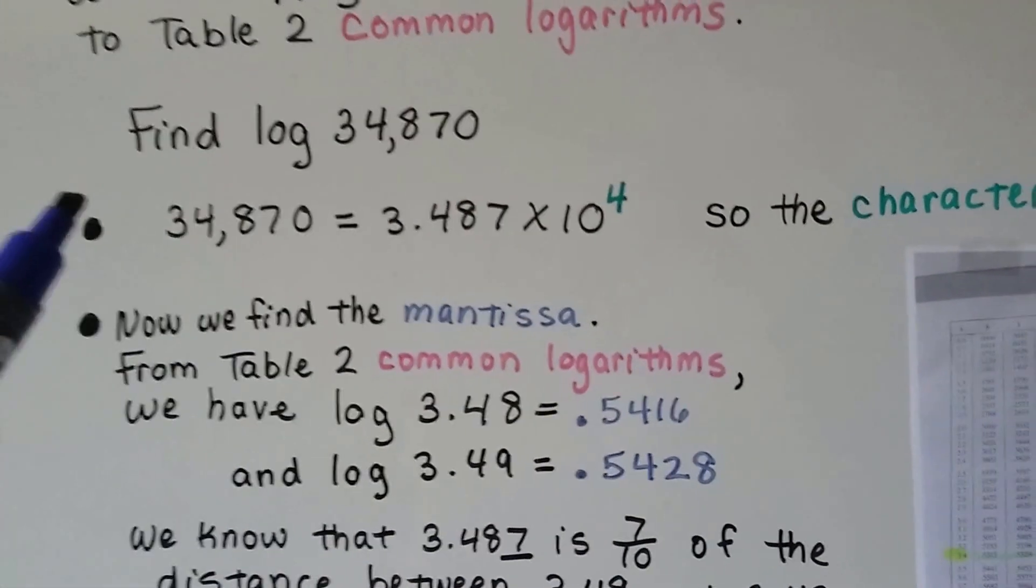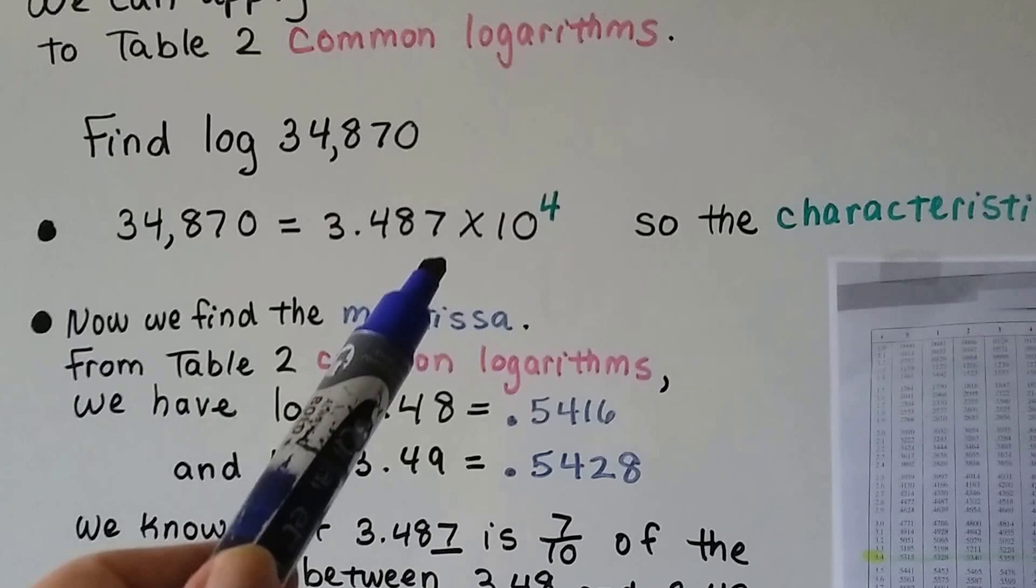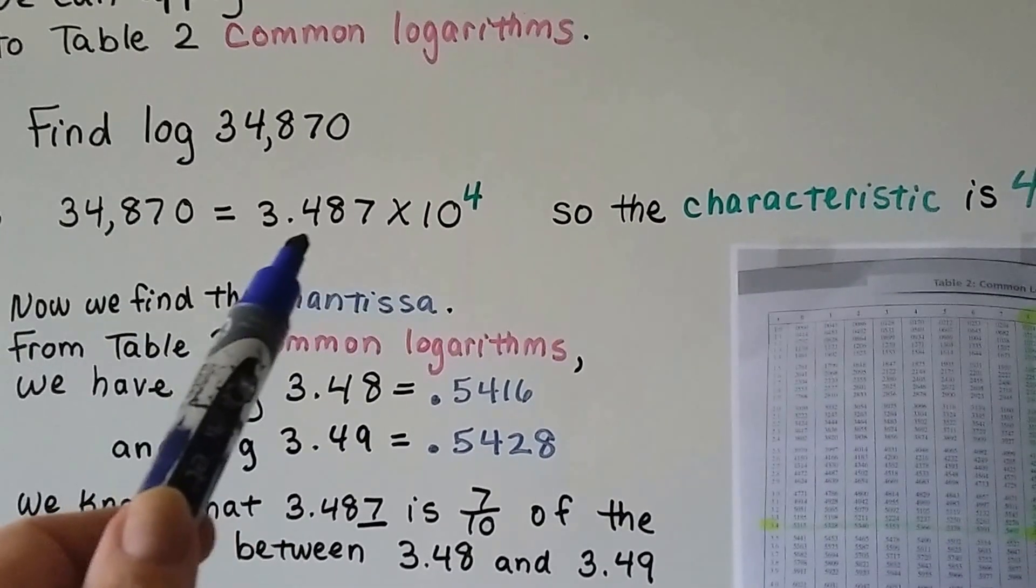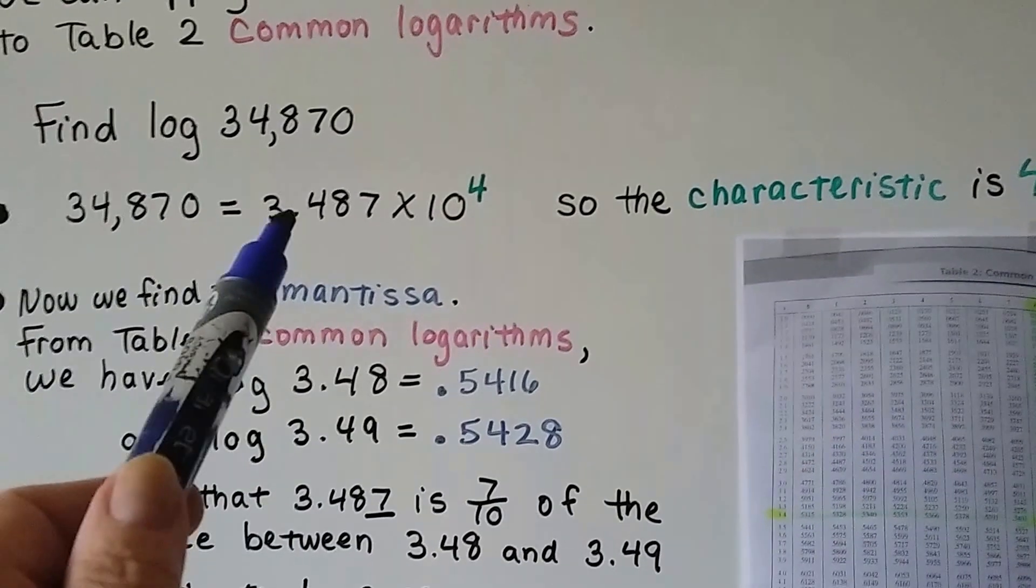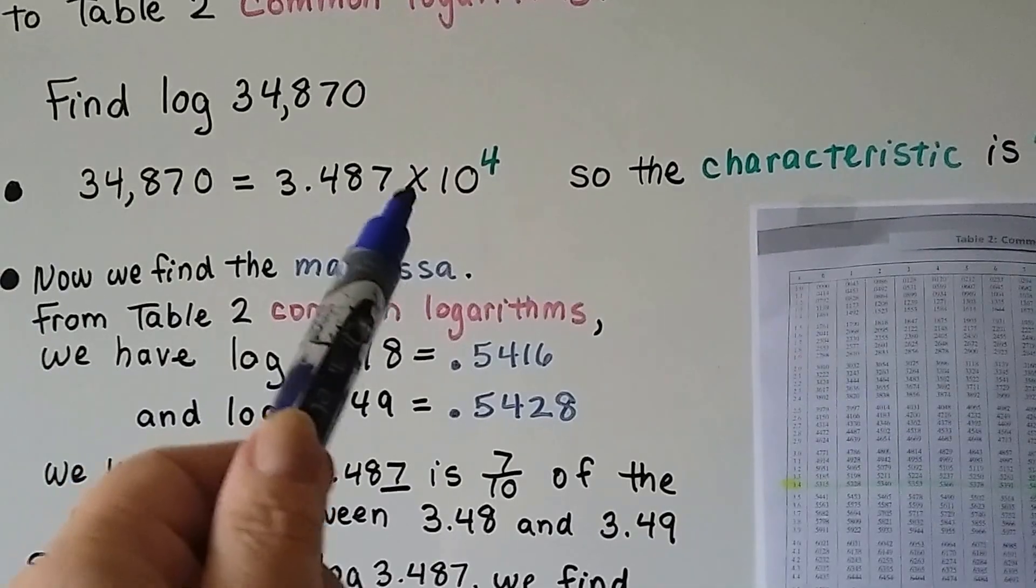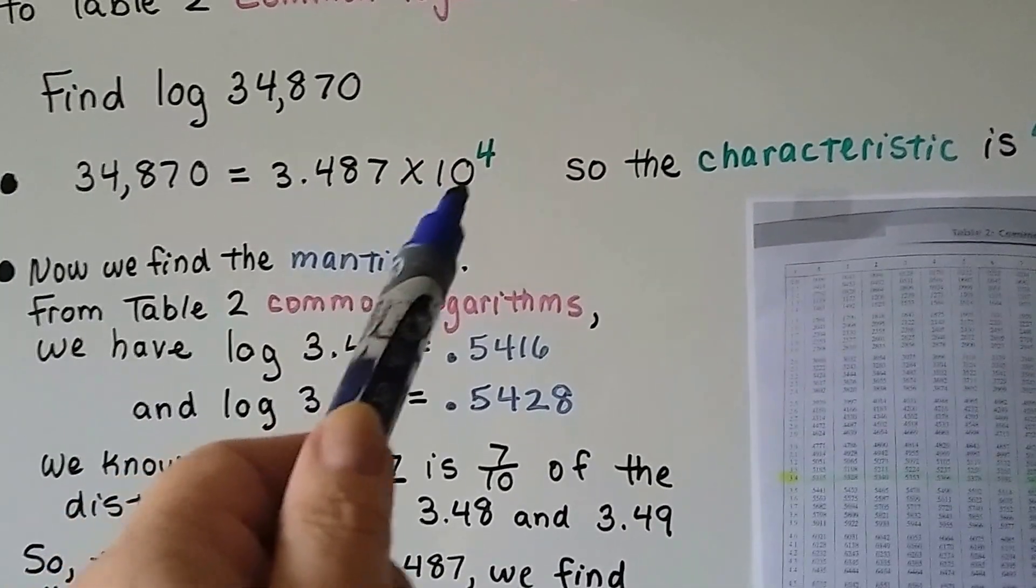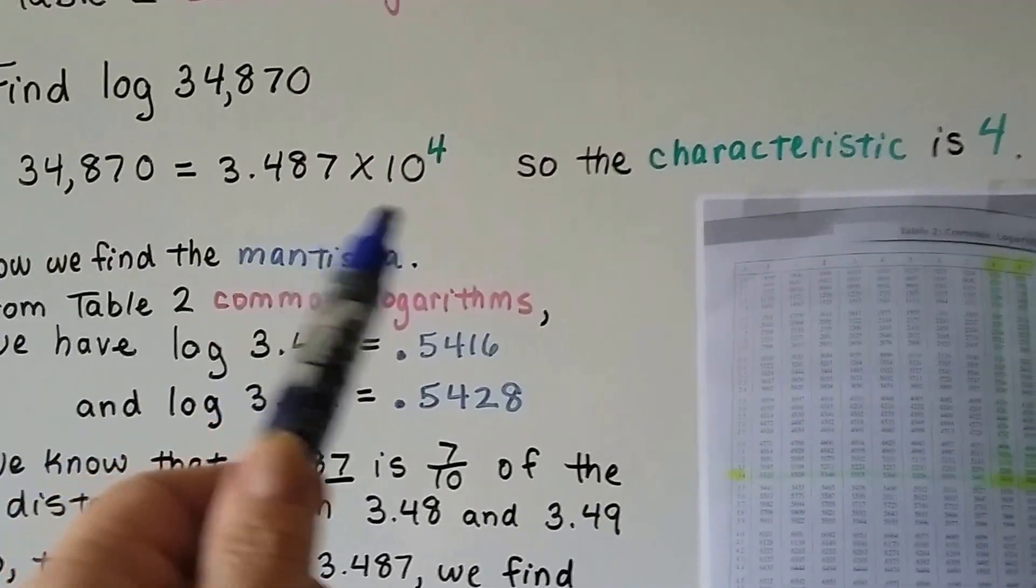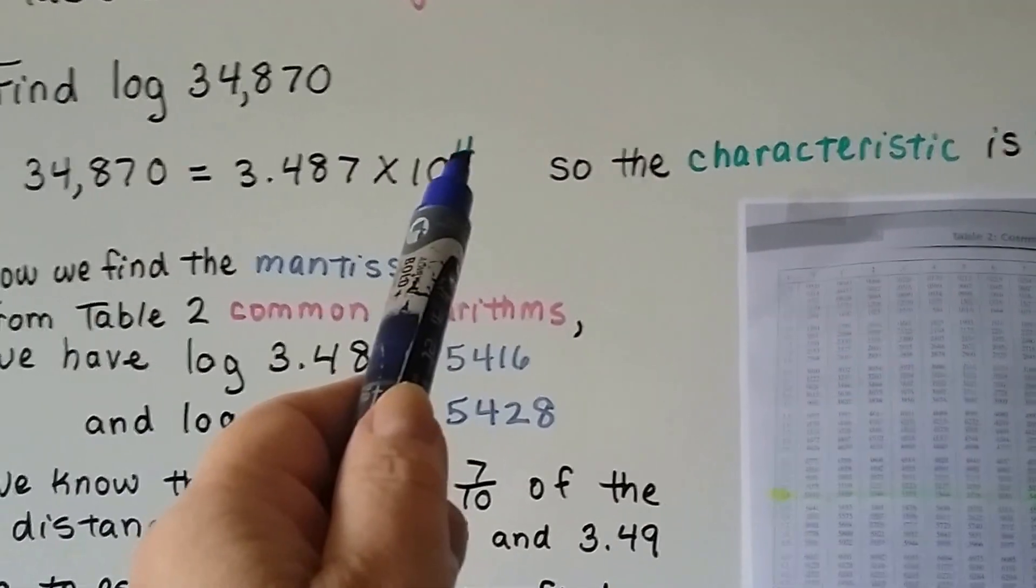If we need to find log 34,870, we first write it in scientific notation. We get 3.487 times 10 to the 4th power, because we have to have one digit in front of the decimal. Because we move the decimal 4 spaces, our characteristic is 4.